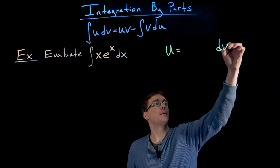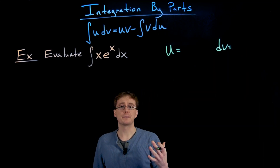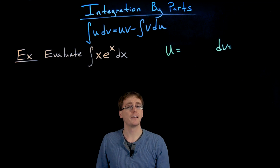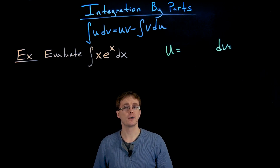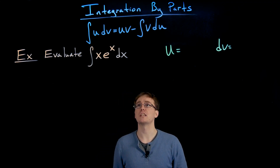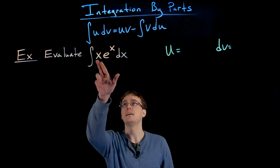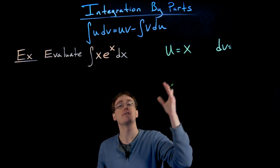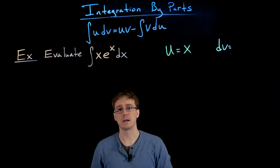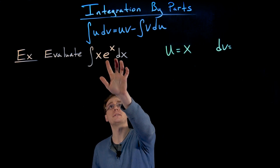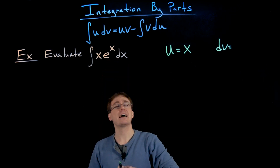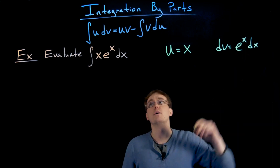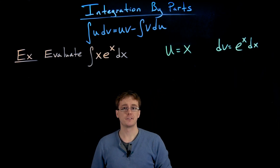Our first step is identifying what our pieces u and dv are going to be. At the end of this video I'll give a little tip for helping us make those choices, but for this example let's just jump right in. Let's let the function x be our u in the integration by parts formula, and the leftover piece, e to the x times the differential of x, will be our dv.